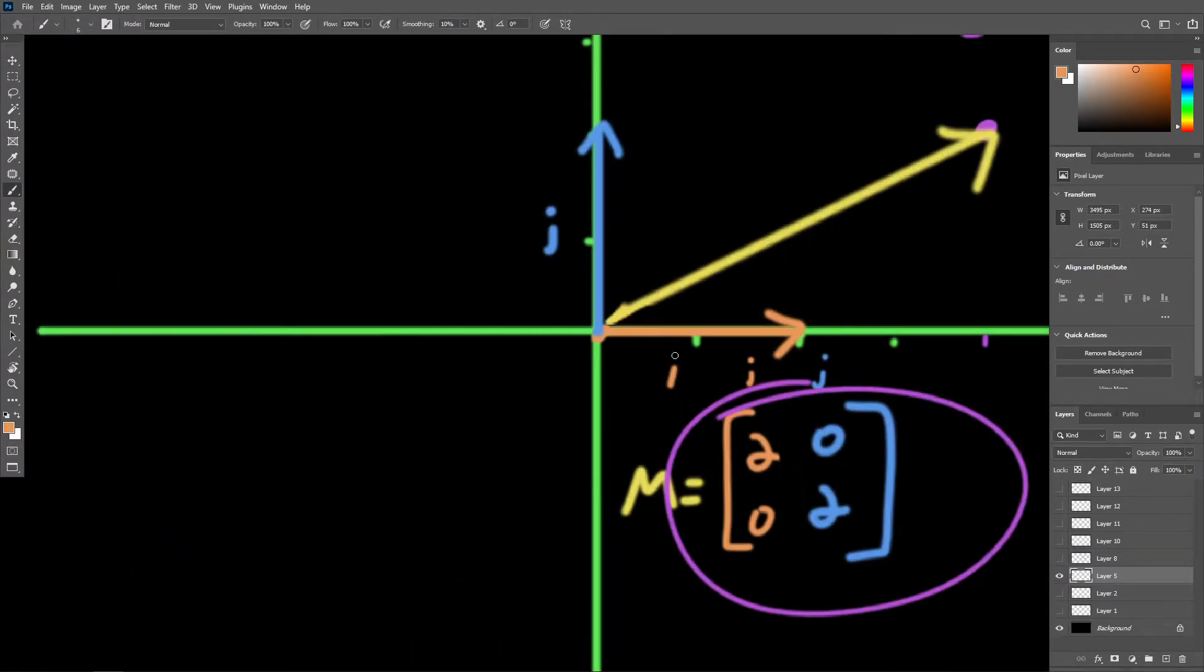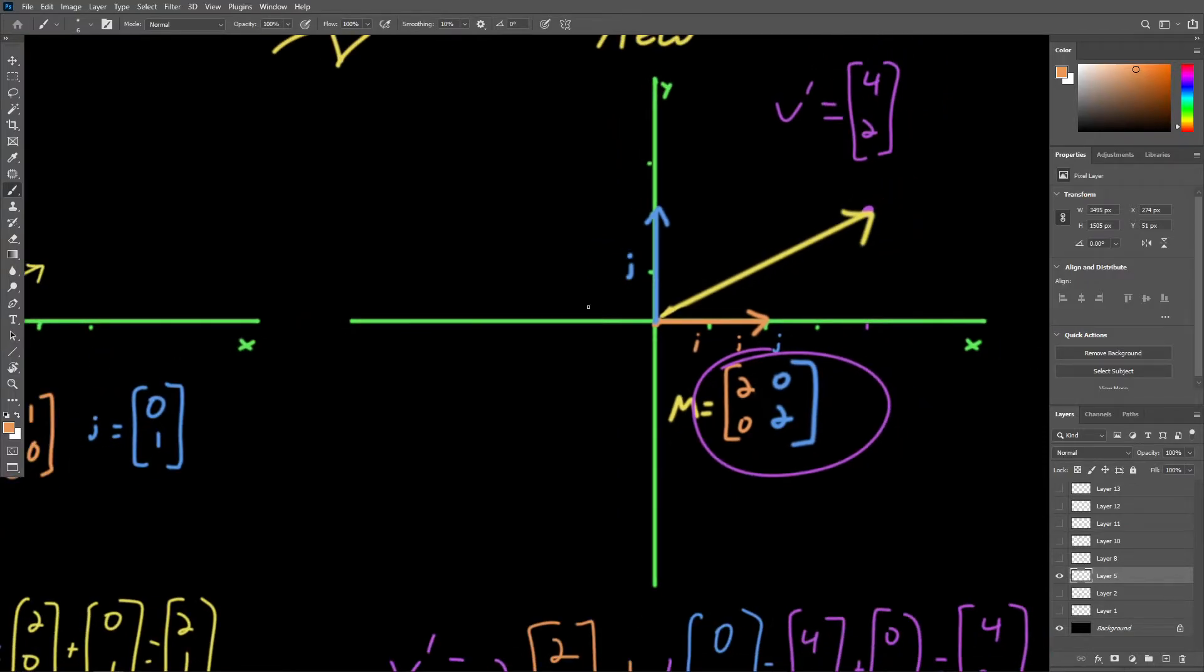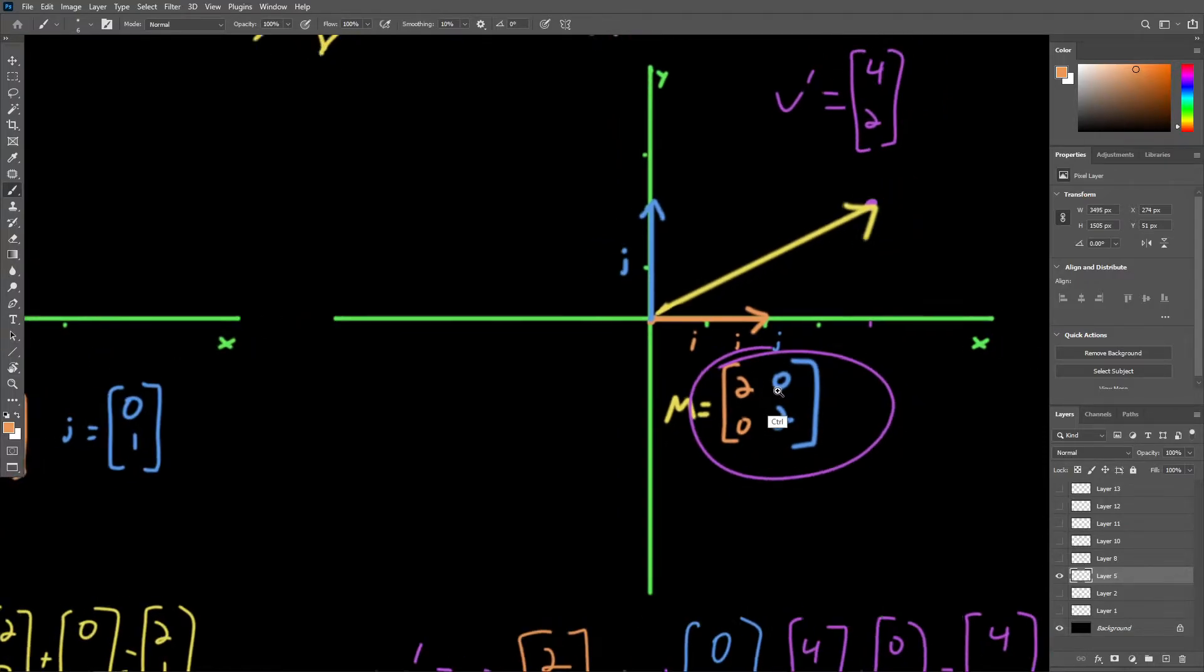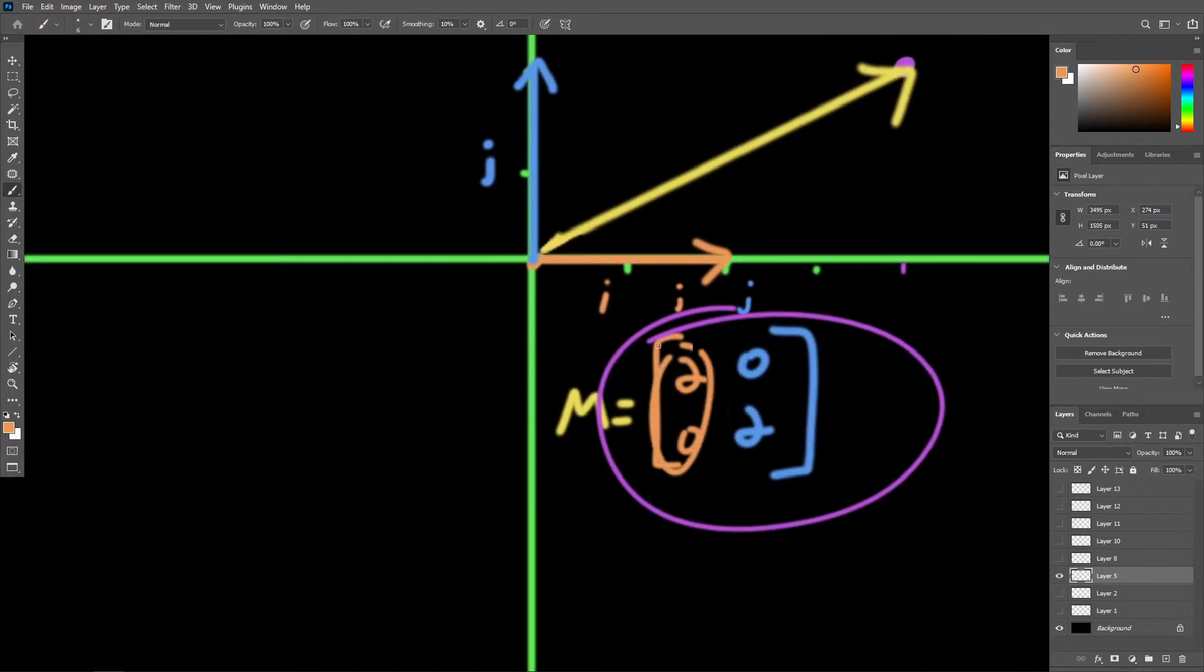We saw that i and j, they were kind of doubled in magnitude. They landed at the coordinates two, zero for i and zero, two for j.